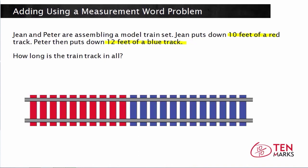You can add measurements of objects the same way that you add numbers. So let's take notice of what we're told. We know that Jean puts down 10 feet of a red track. This space right here is what Jean did, and it's 10 feet.